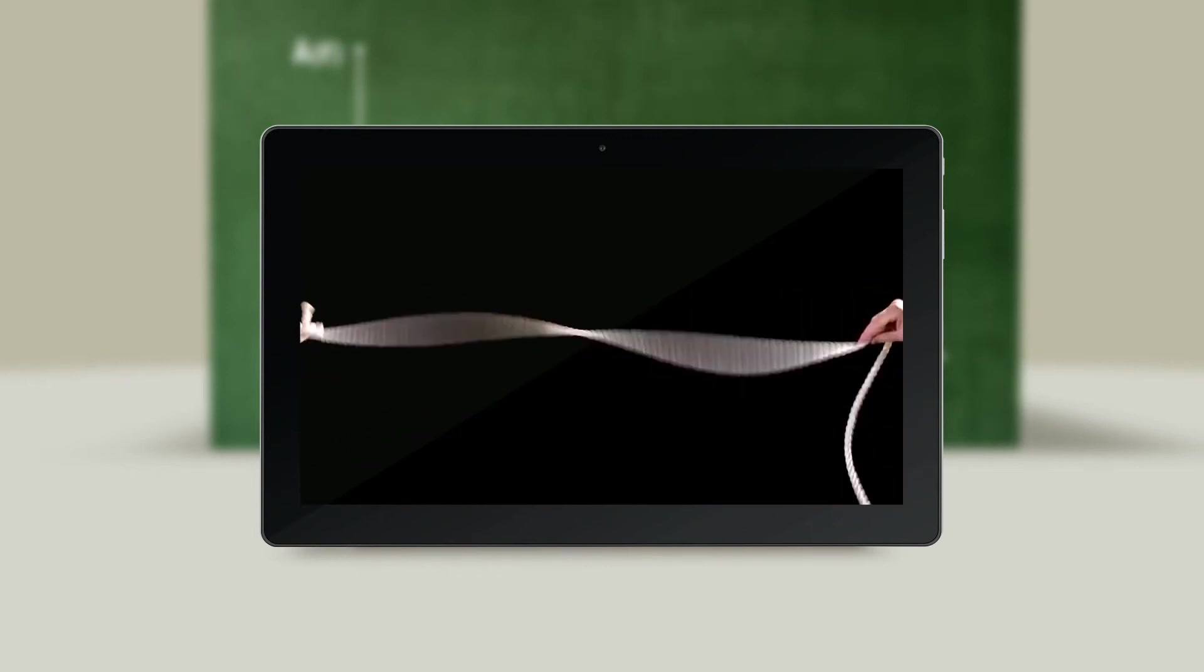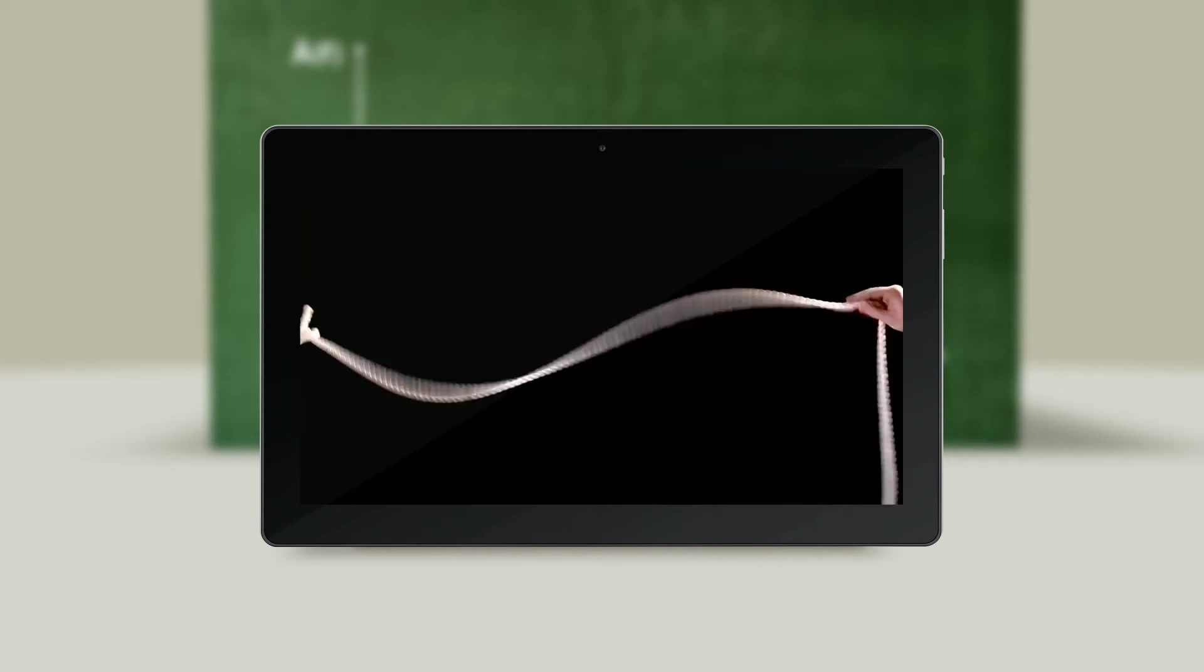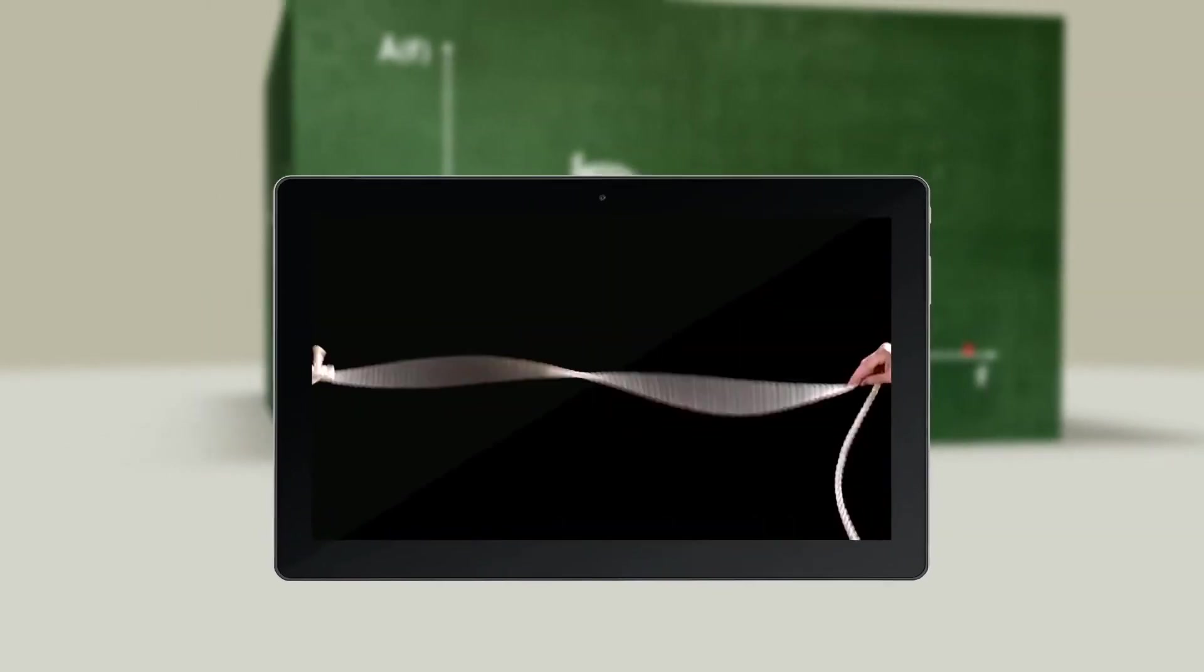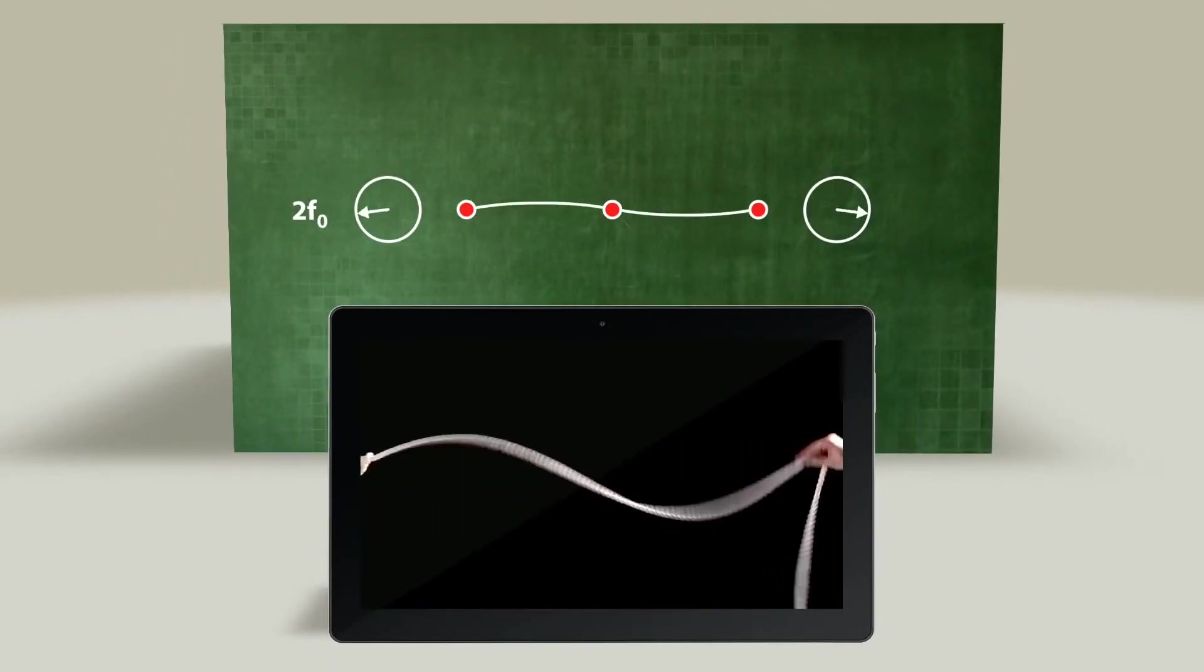When the frequency doubles, the wavelength is halved. This happens because the product of frequency and wavelength is always equal to the wave propagation rate on the string. That means there are now two antinodes on the vibrating string.